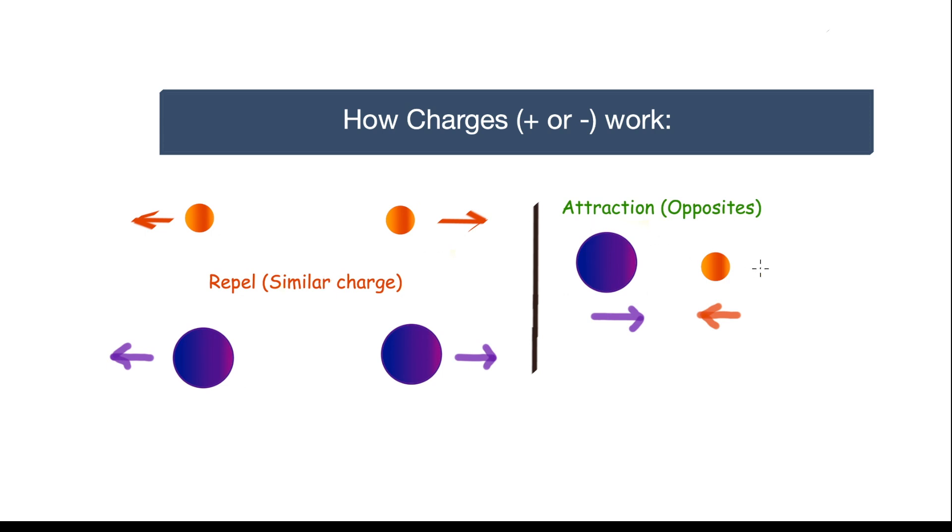Now let's go to the other side. Here opposite charges attract to each other. On the right hand side we see a positively charged proton and a negatively charged electron. They're getting closer and closer to each other. We can call this effect the law of attraction.